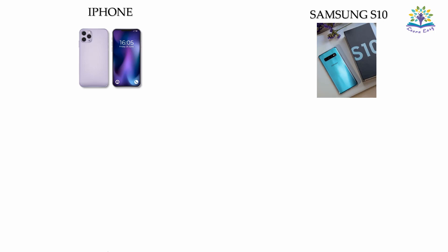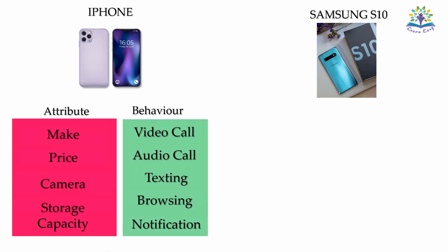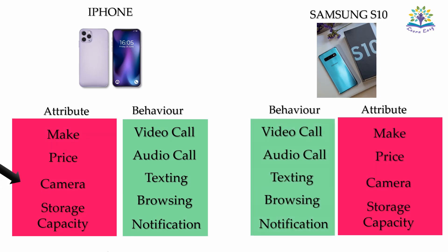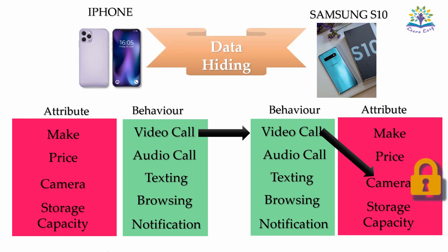Now, if we create two objects for this class — iPhone 11 and Samsung Galaxy S10 — each of these objects receives a copy of attributes and behaviors of the class phone. Can the person using iPhone directly access the camera of Samsung S10? No, right? But when a video call is made, the camera can be accessed if the permission is granted. That is, object 1 can access the attribute camera through the behavior video call, and only if there is permission to do so. This makes the camera secure and hidden from the outside world. So this is how data hiding is done with the help of classes and objects.